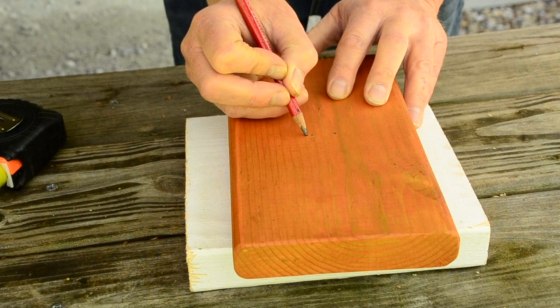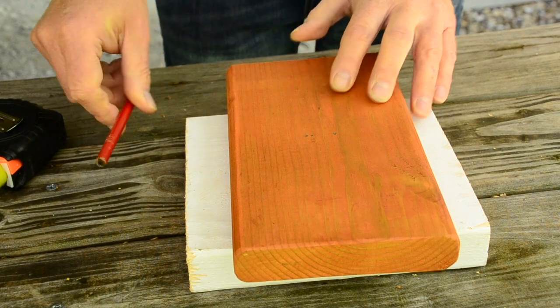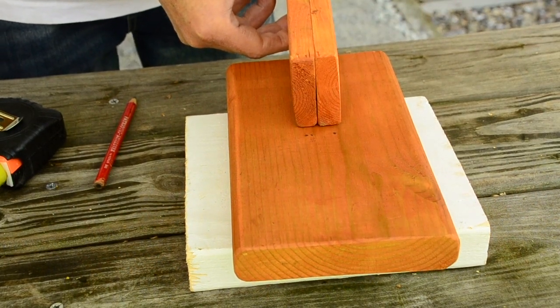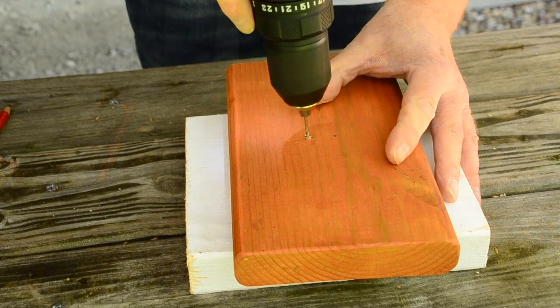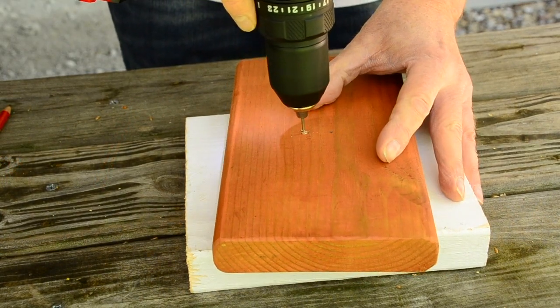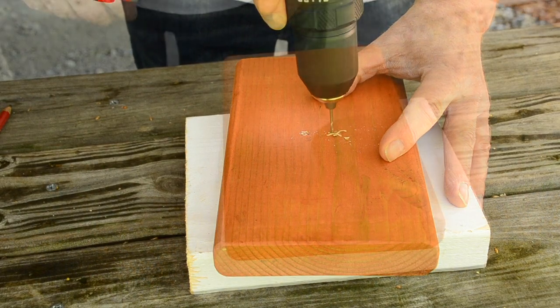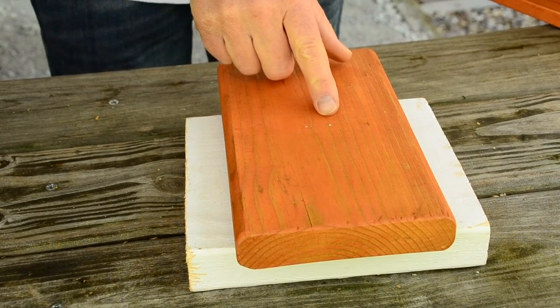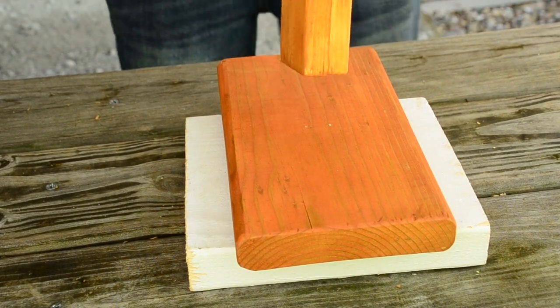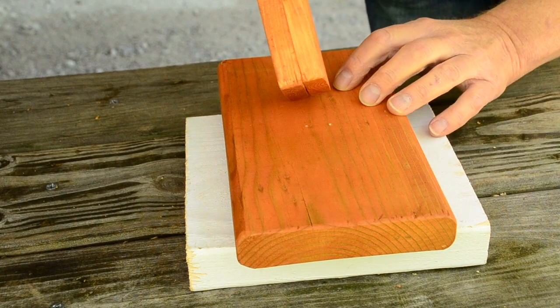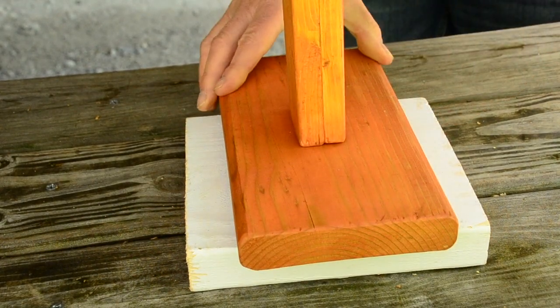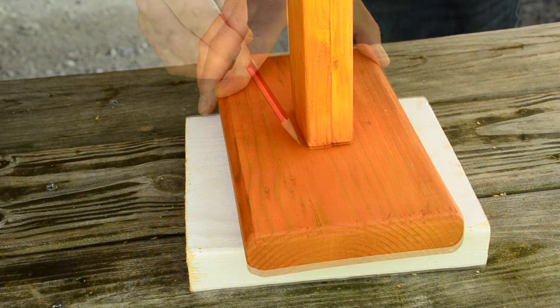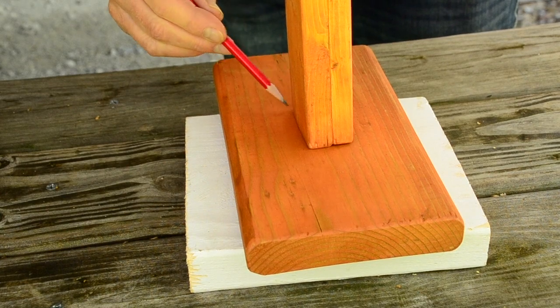Two screws will attach through the base to your furring strip assembly. So make sure the furring strip assembly lines up with the holes. Drill two pilot holes using a sixteenth inch bit. On the top side of the base, eyeball where the joined furring strips will attach through these two screw holes. Then trace around the joined furring strips to mark the position.